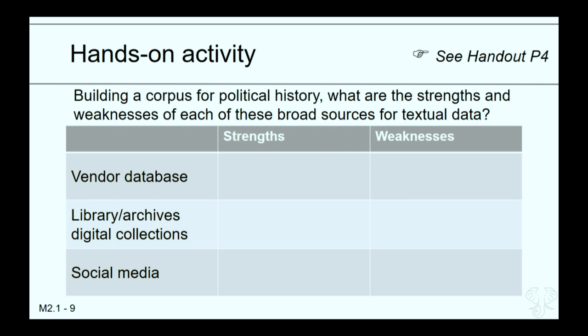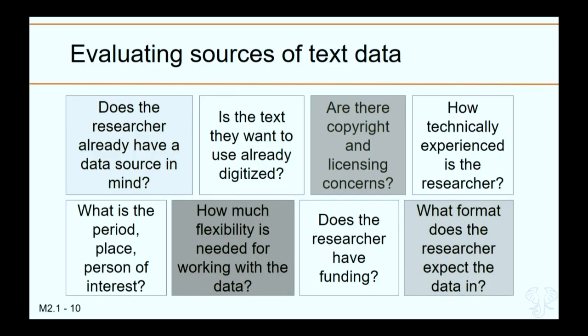With those qualifications in mind, consider what the challenges and weaknesses would be in trying to use those different sources if the student wanted to build a corpus for political history — what are the strengths and weaknesses for each source? These are some of the things you want to talk about with the researcher: do they have a data source in mind? Is it digitized? What's the period, place, or person of interest? How much flexibility is needed for working with that data? Are there copyright and licensing restrictions? How experienced is the researcher? Does the researcher have funding?